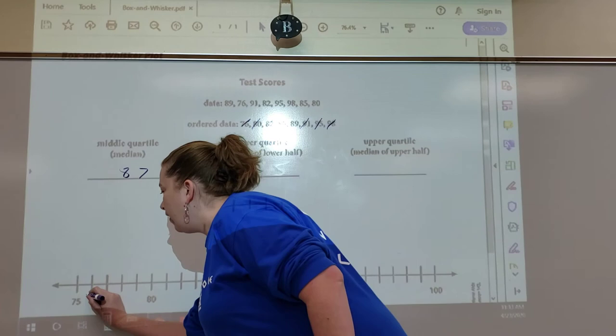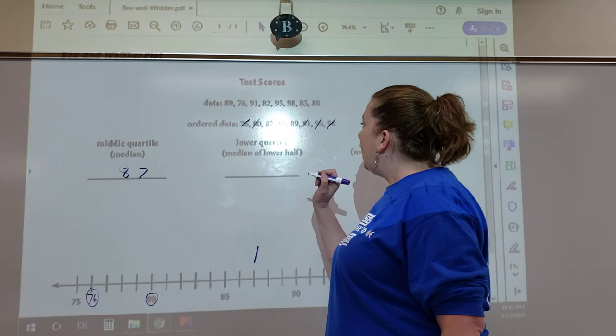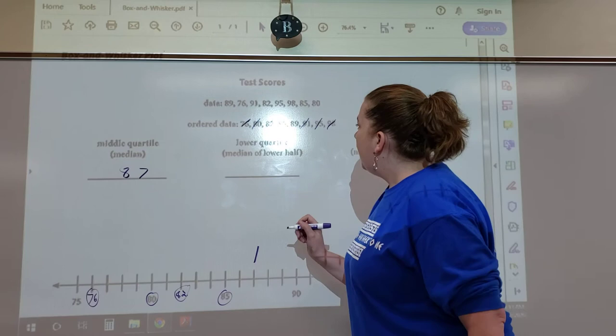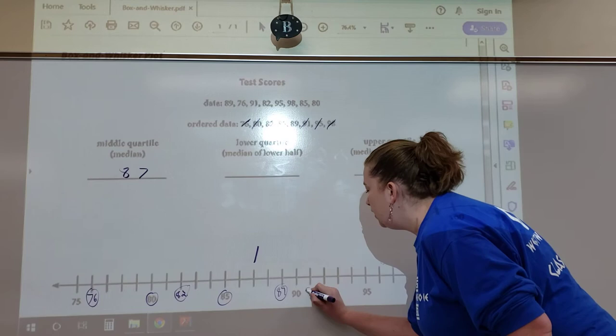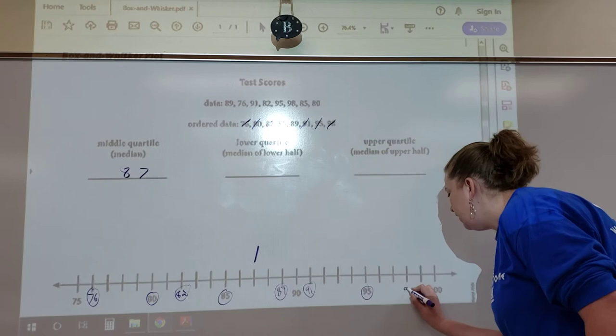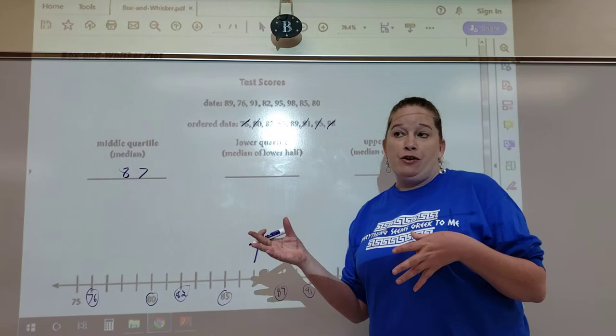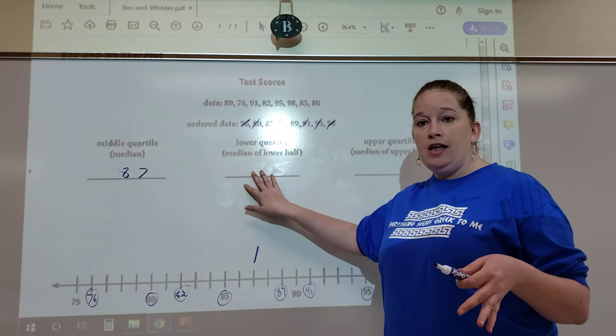Our first score is 76, so I'm going to write 76. Our next score is 80, so I'm going to circle it. Then we have 82, 85, 89, 91, 95, and 98. I'm going to explain why this helps you out.